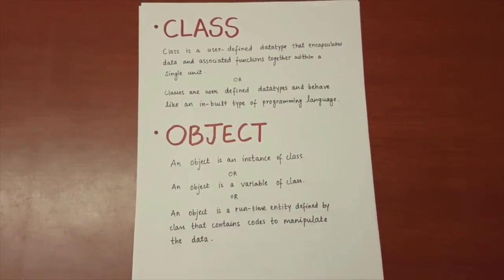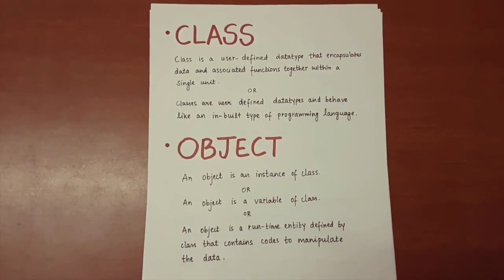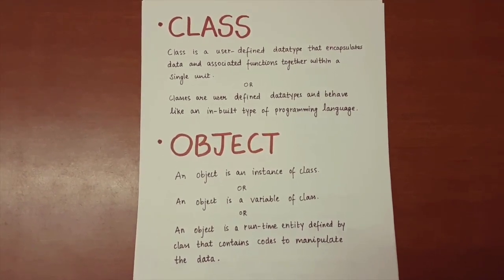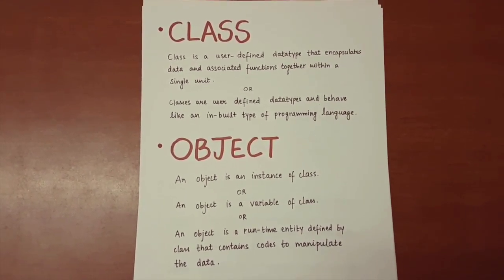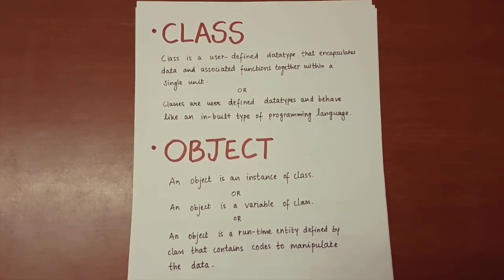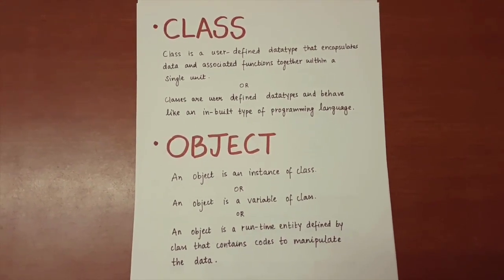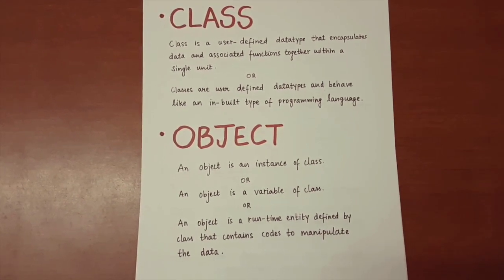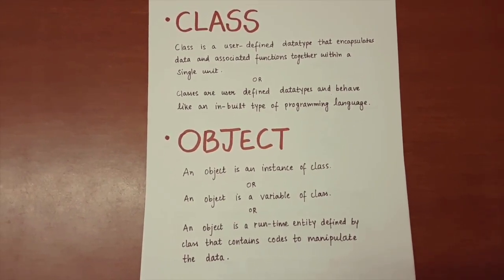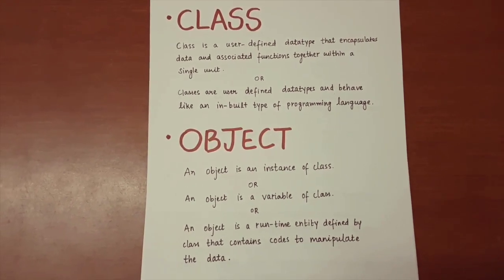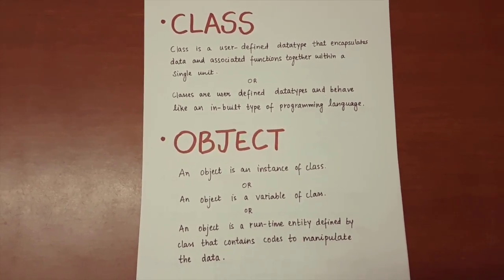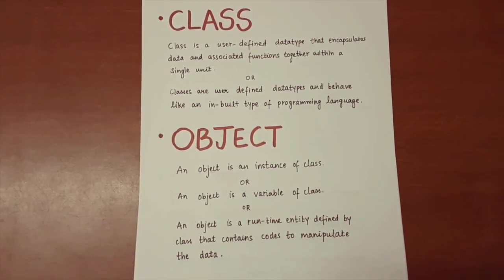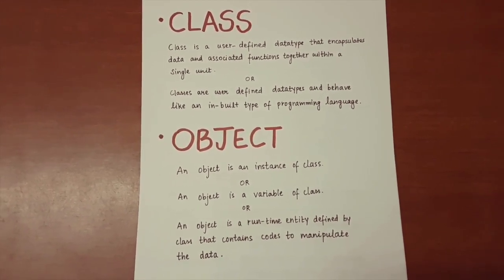Now we move on to the main topic: class and object. A class is a user-defined data type that encapsulates data and associated functions together within a single unit. Classes behave like a built-in type of a programming language. An object is an instance of a class, or a variable of a class, or a runtime entity defined by a class that contains code to manipulate the data.